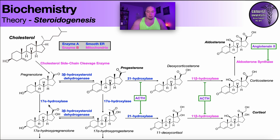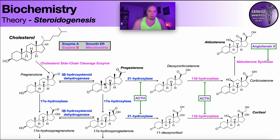17-alpha-hydroxylase takes the 17 position and hydroxylates it. Pregnenolone gets hydroxylated at this position and becomes 17-alpha-hydroxypregnenolone. Also progesterone can be acted on by 17-alpha-hydroxylase at the same position to yield 17-alpha-hydroxyprogesterone. This is an irreversible reaction, so once these two molecules are converted into their 17-alpha-hydroxy derivatives, they can no longer become aldosterone.